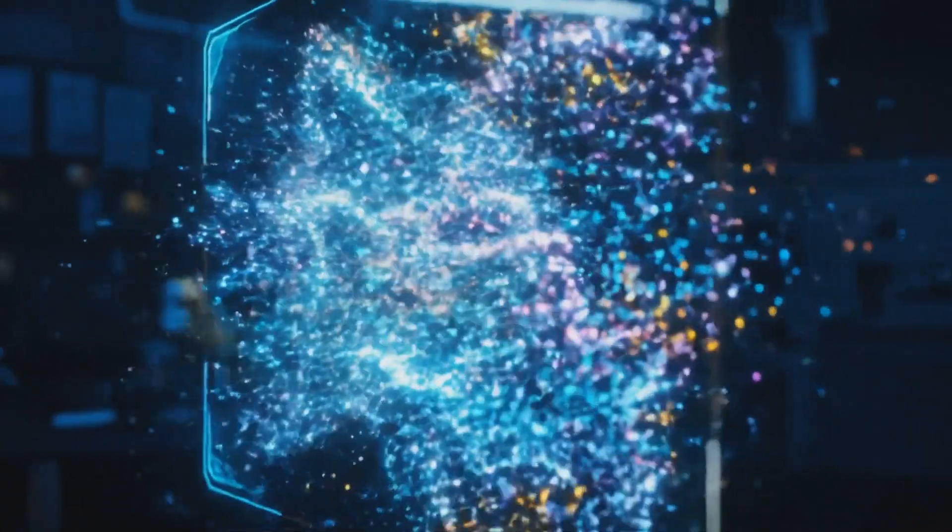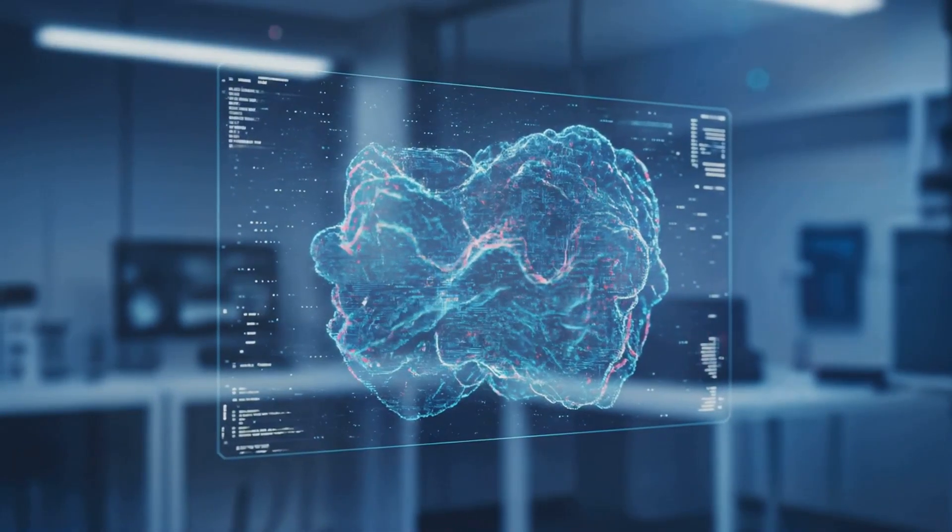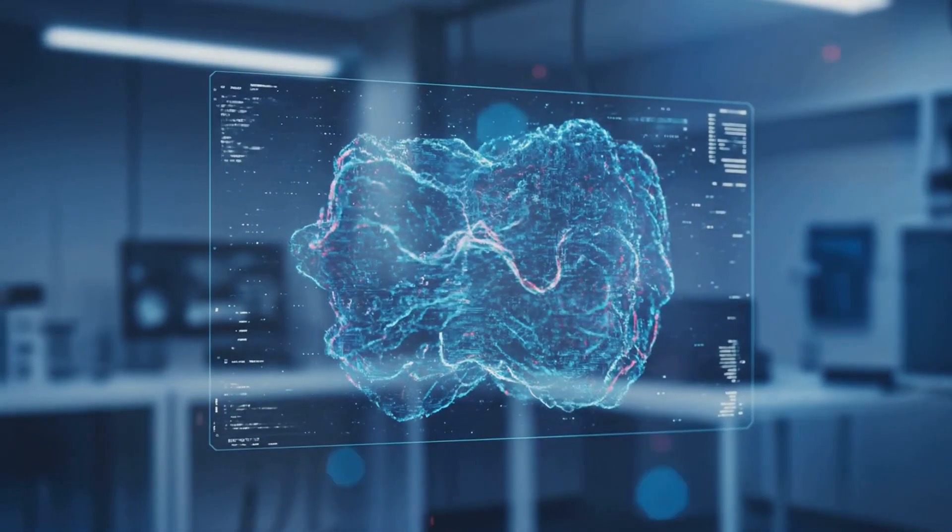Each one is a voxel, a volumetric pixel. Together, hundreds of thousands of these voxels form holograms you can actually see hanging in the air.